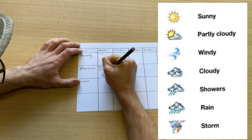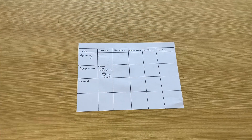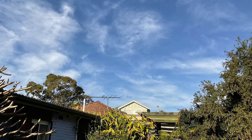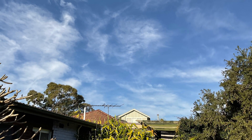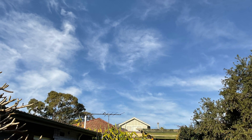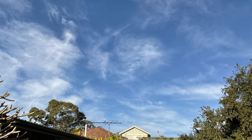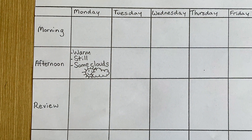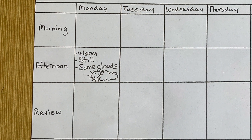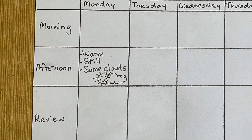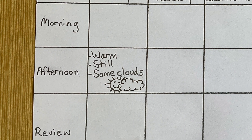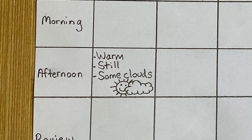Here are some common weather symbols. Now it's your turn — look out an open window or get an adult's permission to go outside, and then record your observations in the correct place on the table. Pause the video and record your observations now.